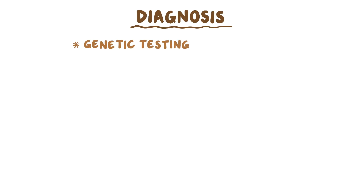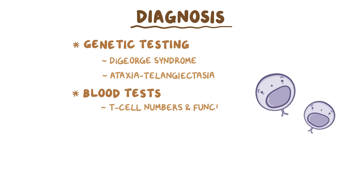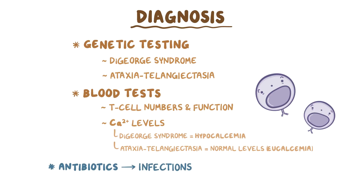Diagnosing thymic hypoplasia often starts with genetic testing, which can help identify if it's DeGeorge syndrome or ataxia telangiectasia syndrome. Certain blood tests looking for T cell numbers and function can help determine the cause of recurrent infections. Also, calcium levels in the blood might hint at the two conditions: in DeGeorge syndrome there's hypocalcemia, while in ataxia telangiectasia there's normal levels of calcium, or eucalcemia. Antibiotics might be used to treat infections from thymic hypoplasia, and surgery might be required for more severe cases, like a thymus transplant.